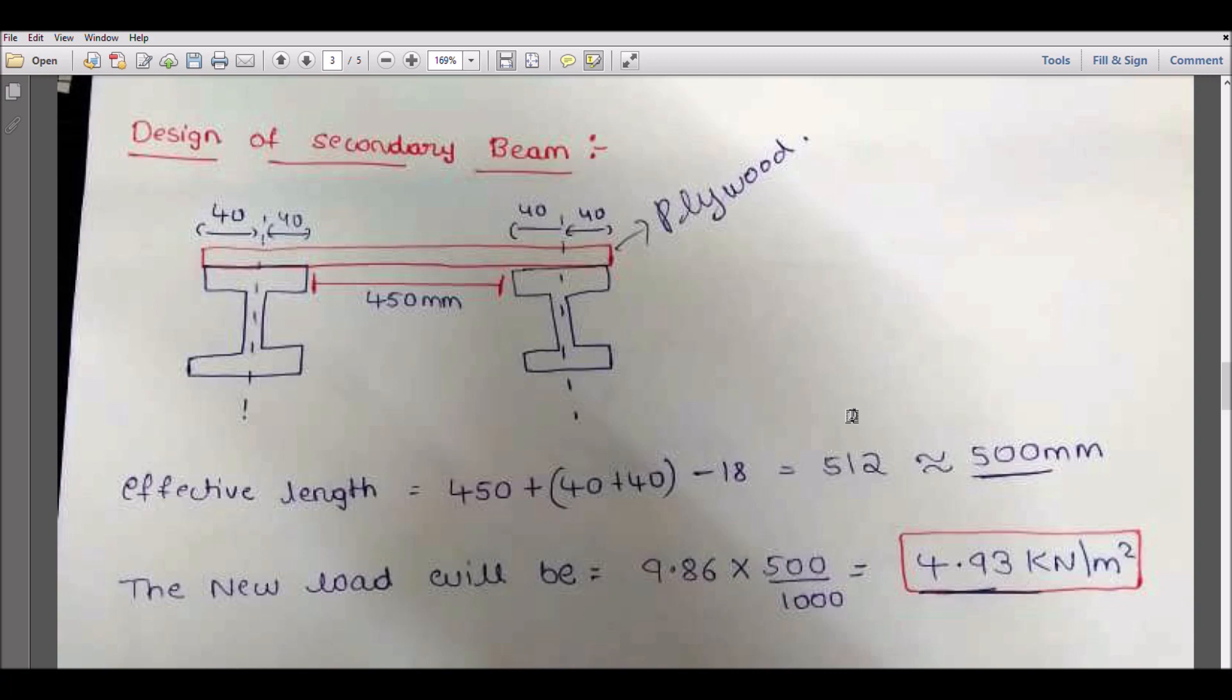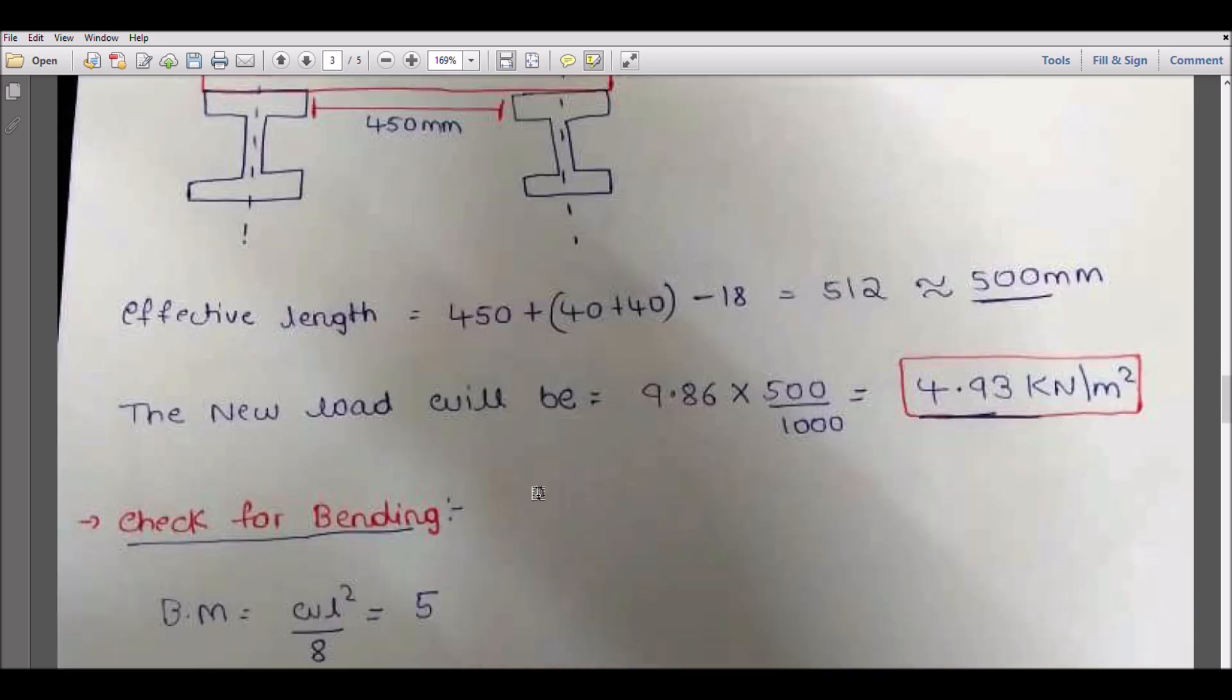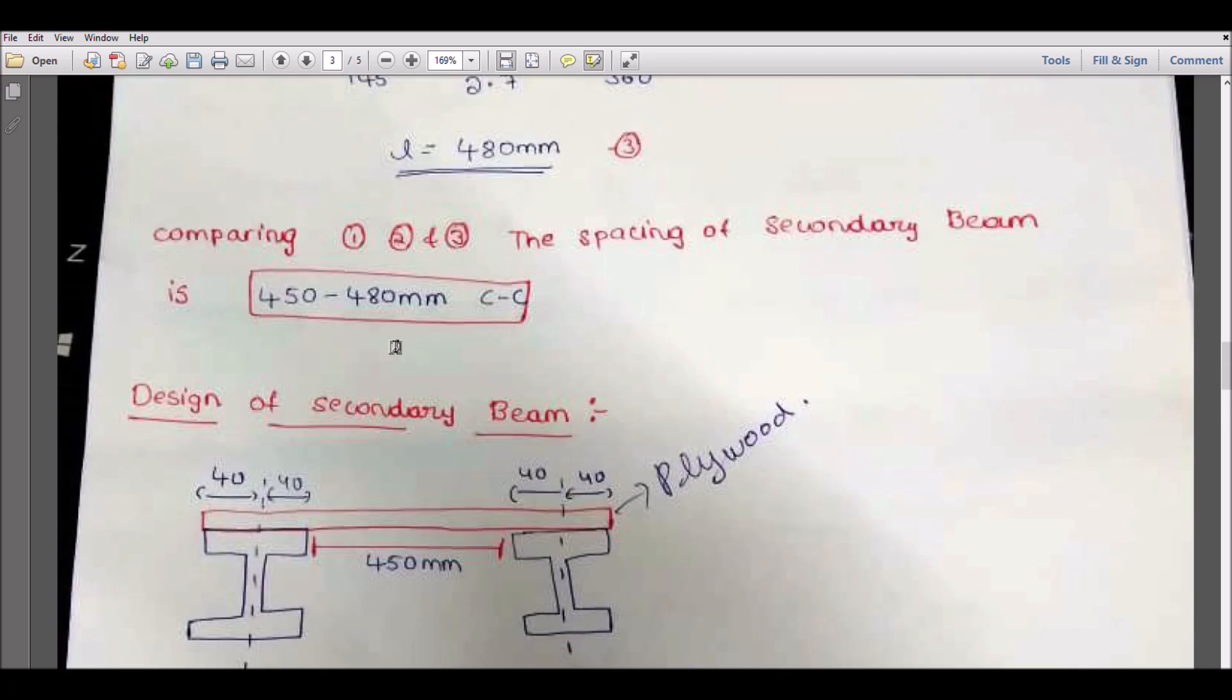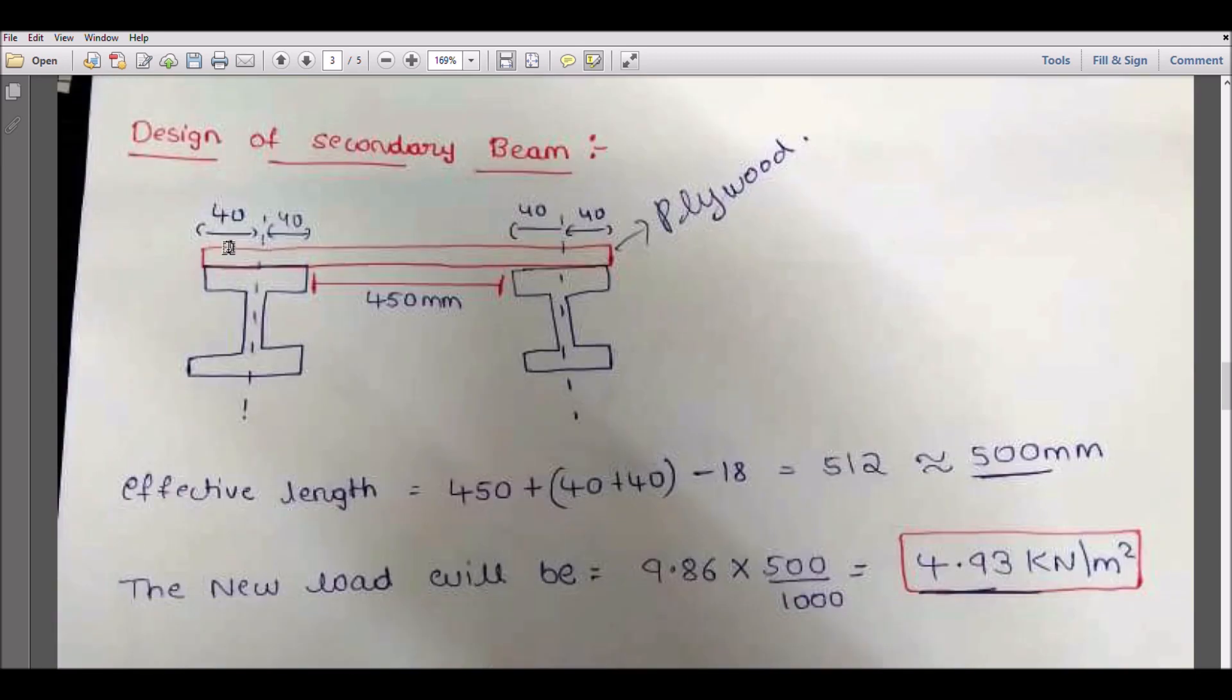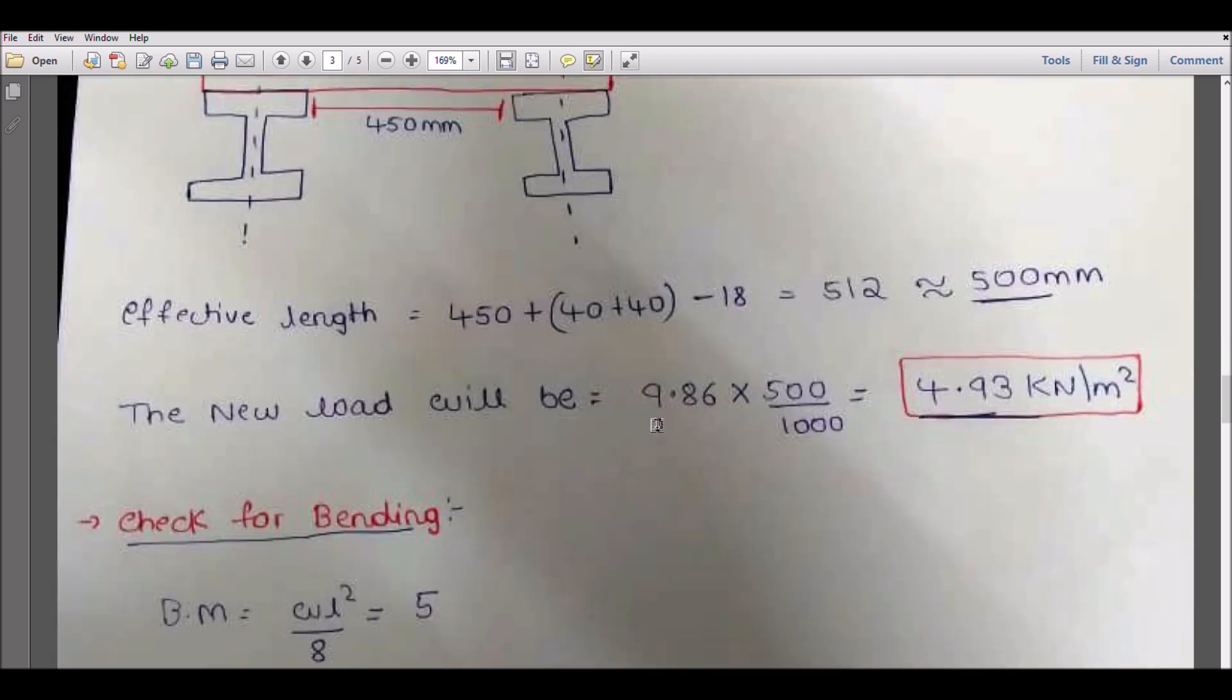Approximately I am considering 500mm. Better to choose least as possible for higher safety. So the new load will be 9.86 in kilonewton per meter square. Now I am dividing this mm to meters, so my total load will be 4.93 kilonewton per meter for the next design step.